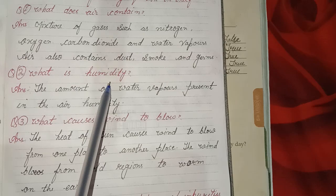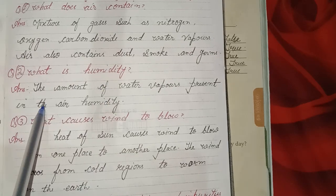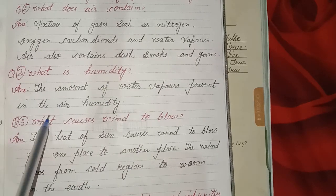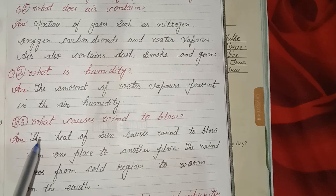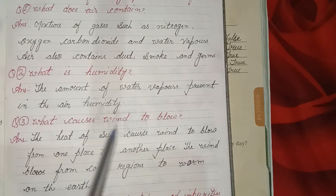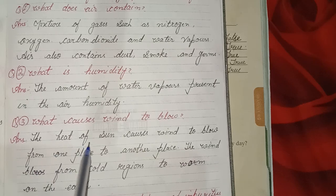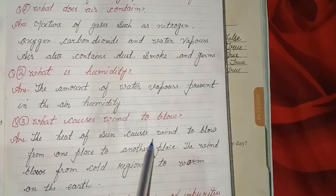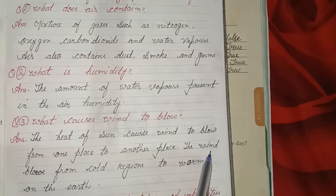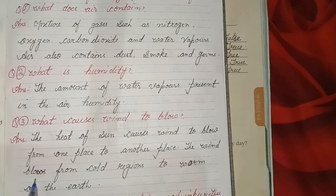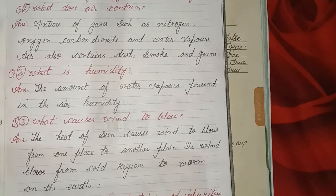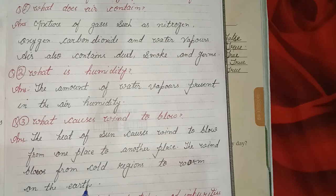Second question: What is humidity? Answer: Humidity is the amount of water vapors present in the air. Third question: What causes wind to blow? Answer: The heat of the sun causes wind to blow from one place to another. The wind blows from cold regions to warm regions on the earth.